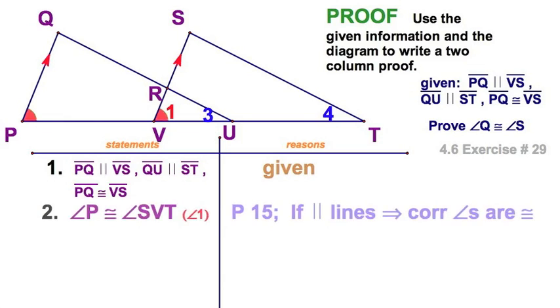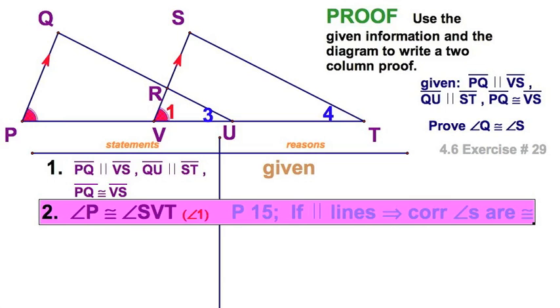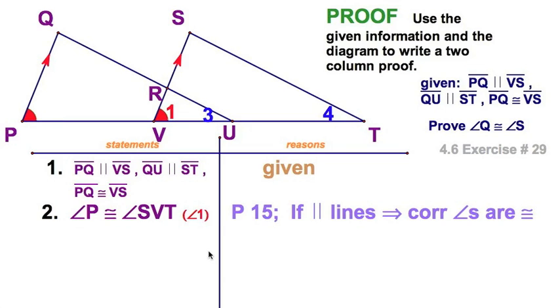So this is our given that PQ is parallel to VS. And from that, I know these two angles are congruent. I'll call them the red angles. So you can use angle P in three letters, or you can put a one in there. I like the numbers. It's a lot easier. So angle P congruent to angle one. And again, make sure you write this postulate in the if-then form. If the lines are parallel, then corresponding angles are congruent from Chapter 3.